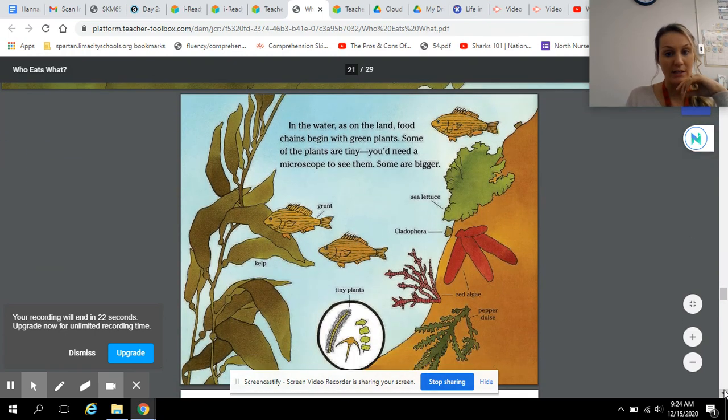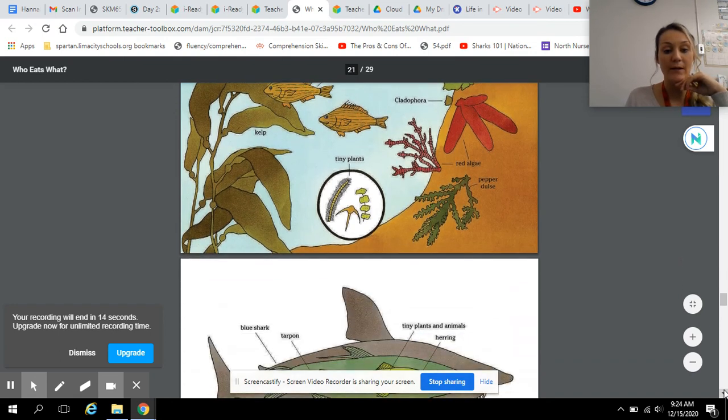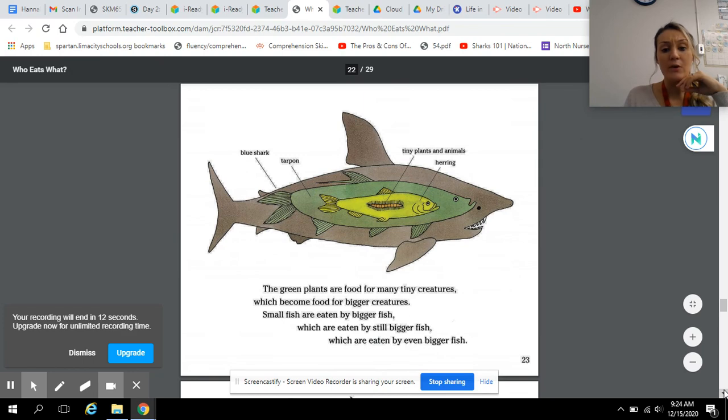In the water, as on the land, food chains begin with green plants. Some of the plants are tiny. You need a microscope to see them. Some are bigger. The green plants are food for many tiny creatures, which become food for bigger creatures. Small fish are eaten by bigger fish, which are eaten by still bigger fish, which are eaten by even bigger fish.